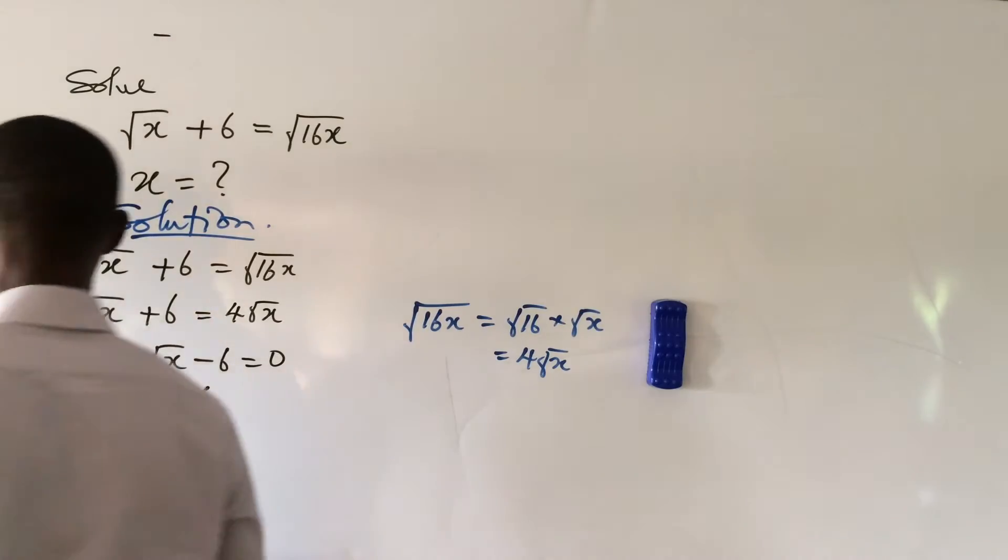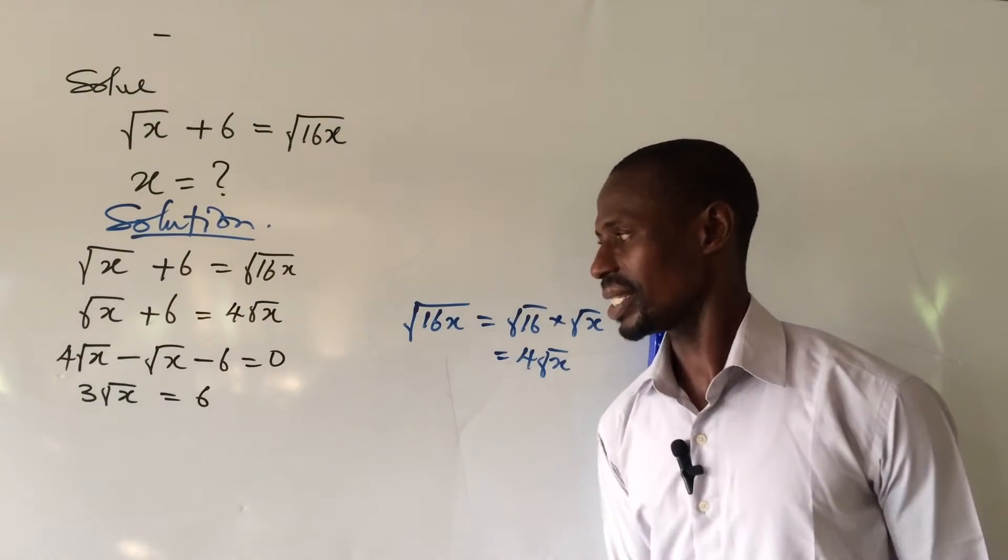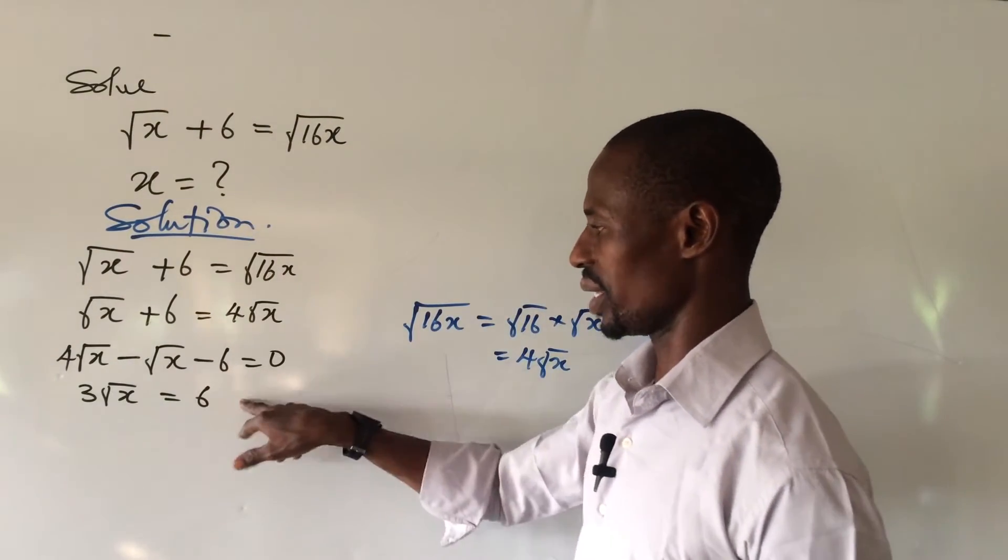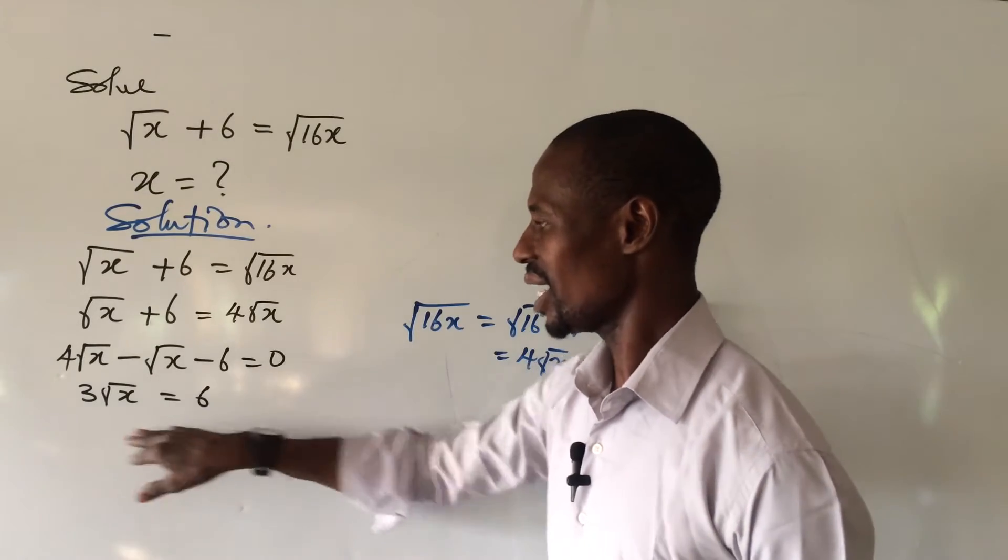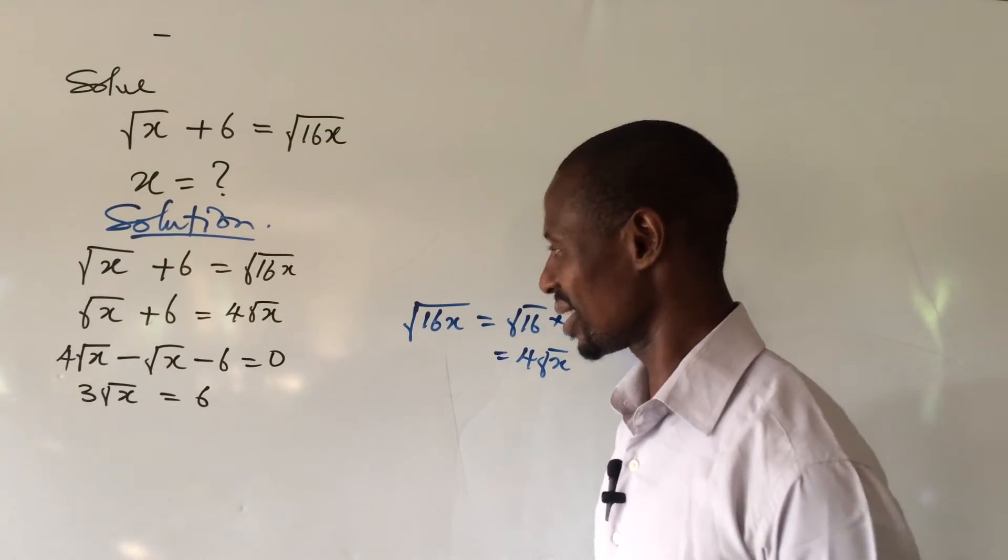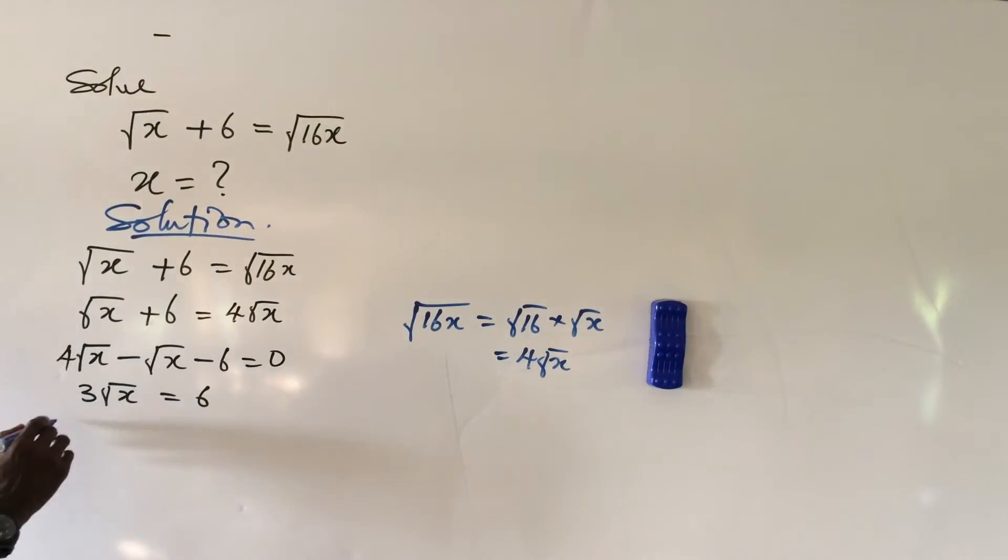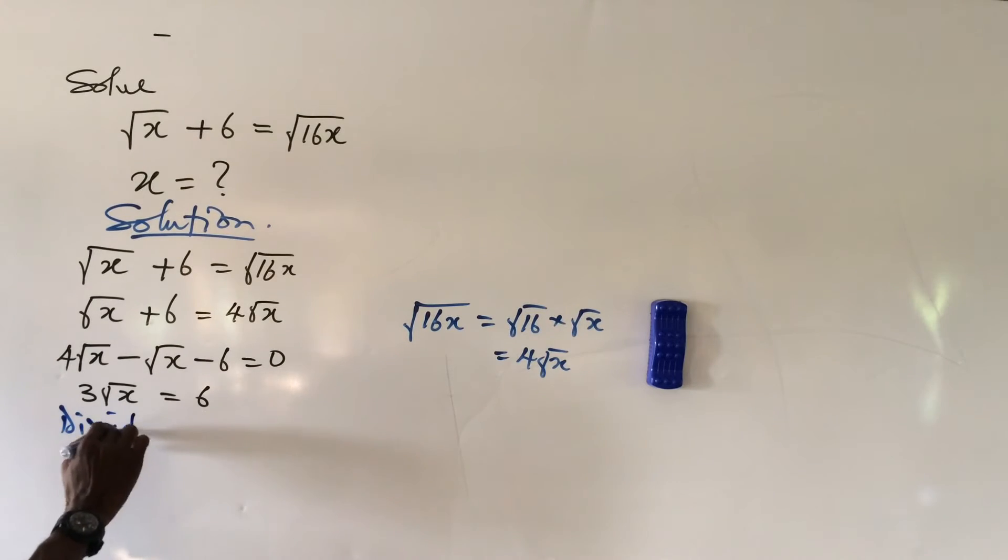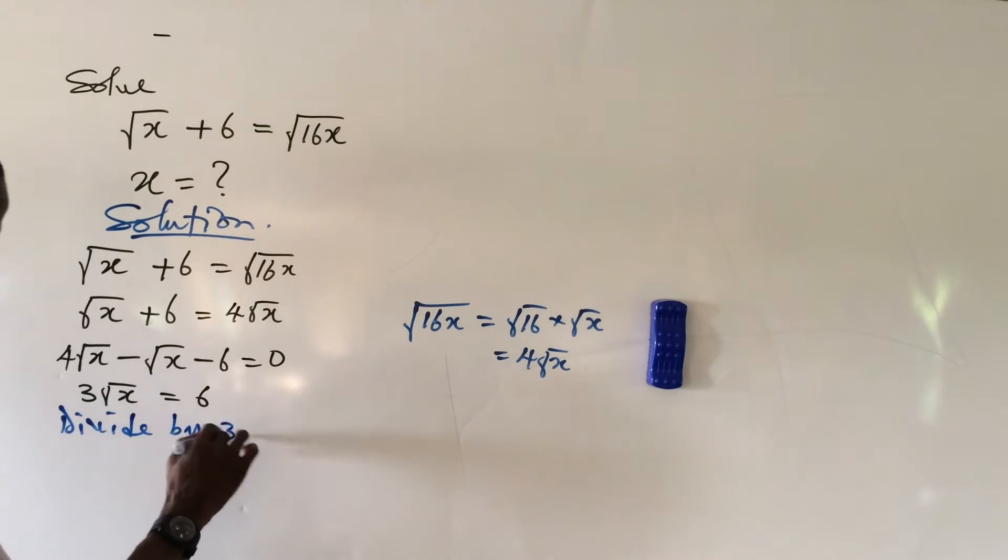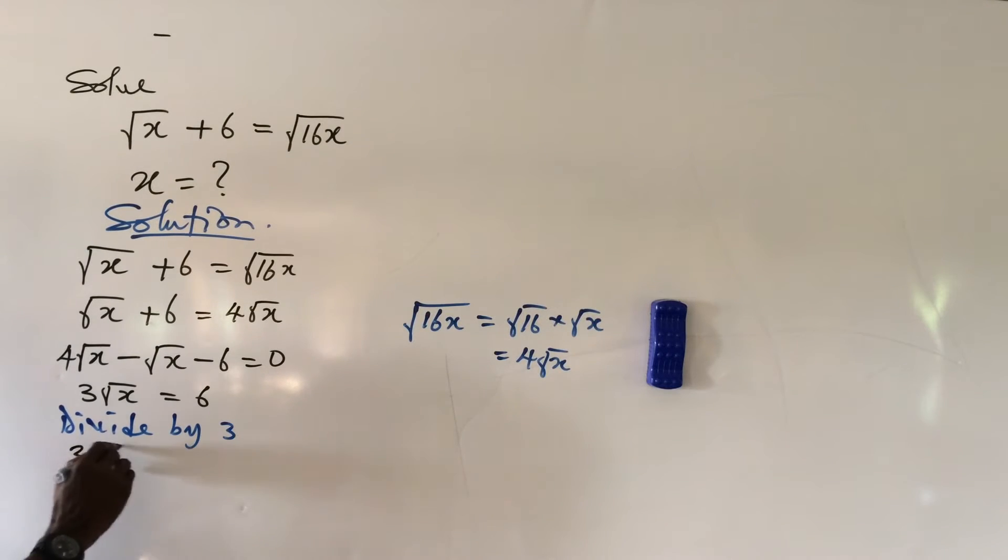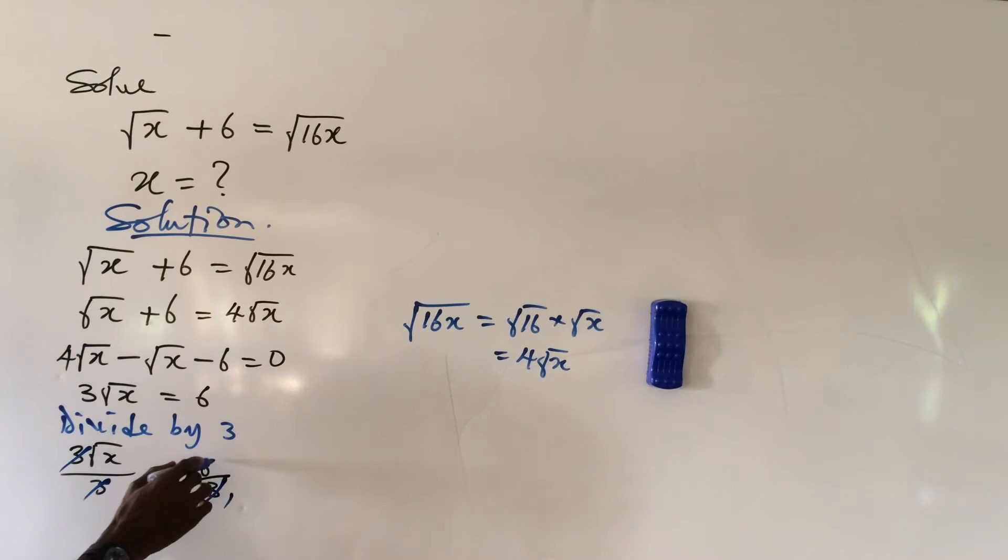We send this minus 6 to this other side. We can divide by 3. So if we do that, we're going to have here 3 root x over 3 equals 6 over 3. And so this 3 will take care of this 3. 3 here, 1, 3 here will give us 2. From here we now have our root x equals 2.